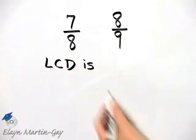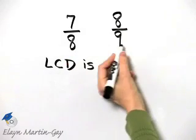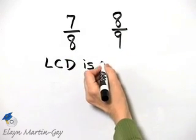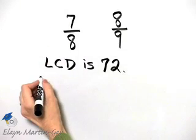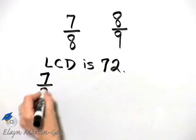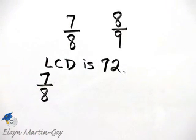Now, the least common denominator for these two denominators is their product 72. So let's take the first fraction, 7 over 8, and let's see how we can rewrite it so that it has a denominator of 72.